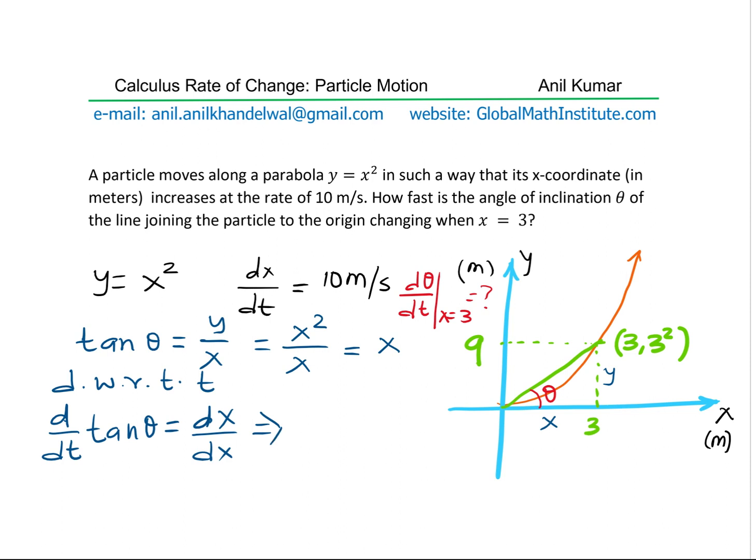The derivative of tan theta, secant square theta times d theta dt, is equal to dx dt.